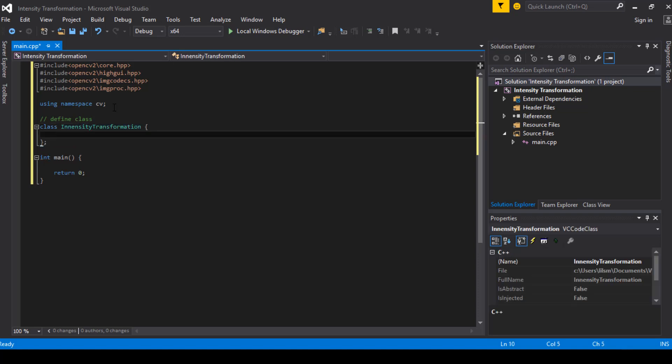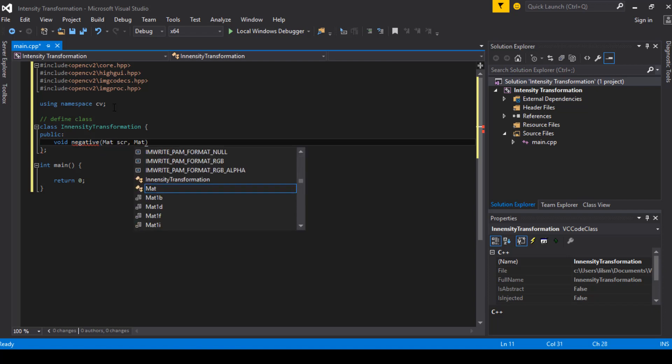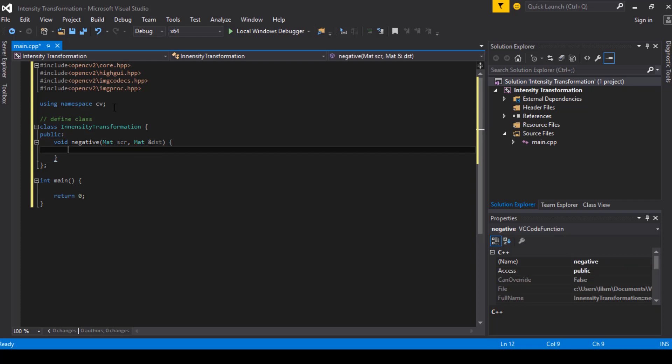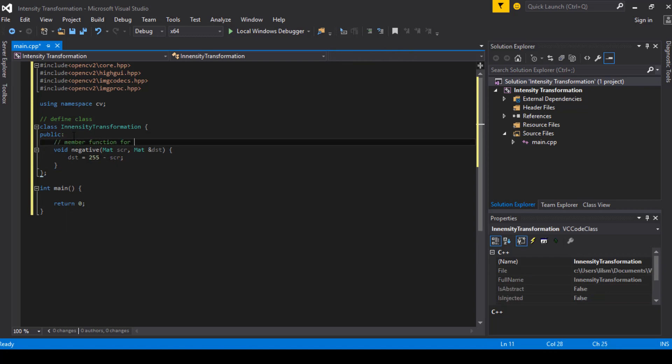Inside I will define a member function and name it negative. It takes two arguments: the input image I will name source, and the output image I will name destination. Now I come back to the negative equation: subtract 255 from pixel intensity of the input image.